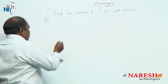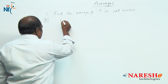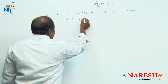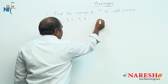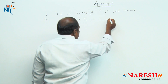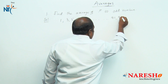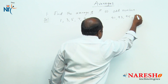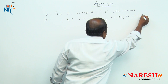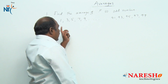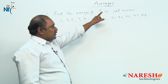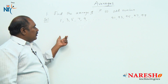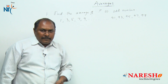Now we know odd numbers — they are 1, 3, 5, 7, 9 and according to the question, it goes up to 91, 93, 95, 97, 99. So the first 50 odd numbers are from 1 to 99.